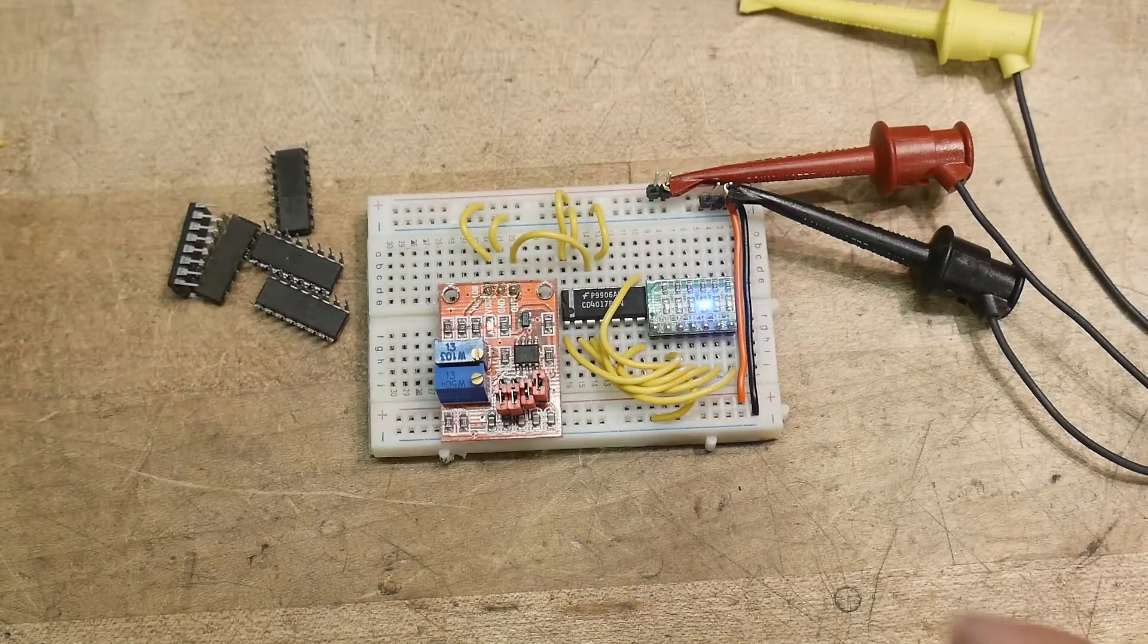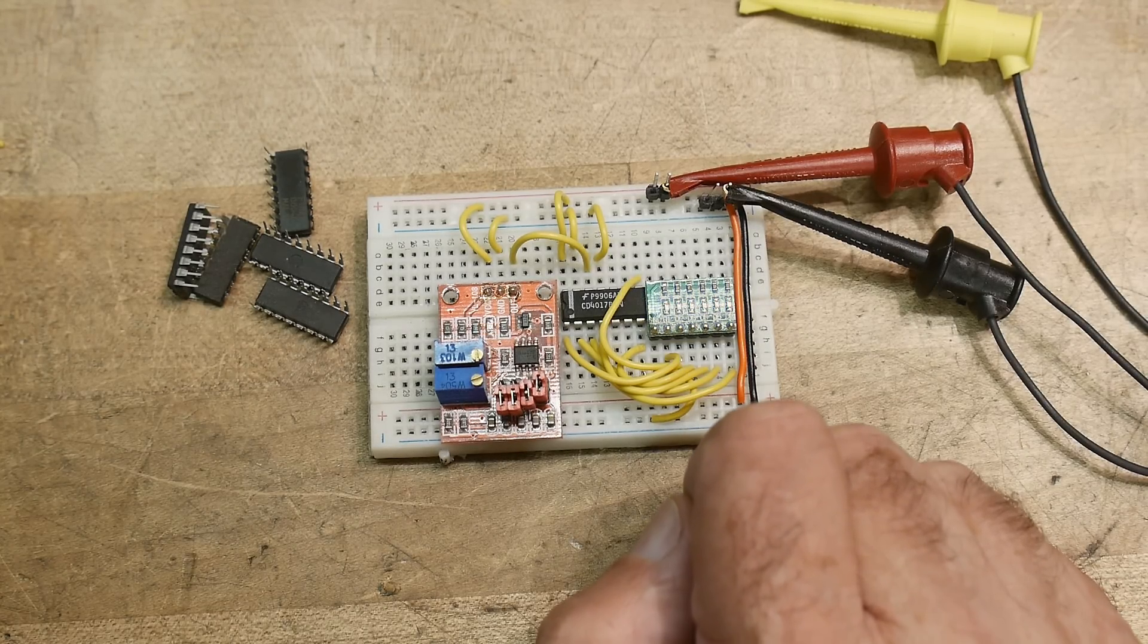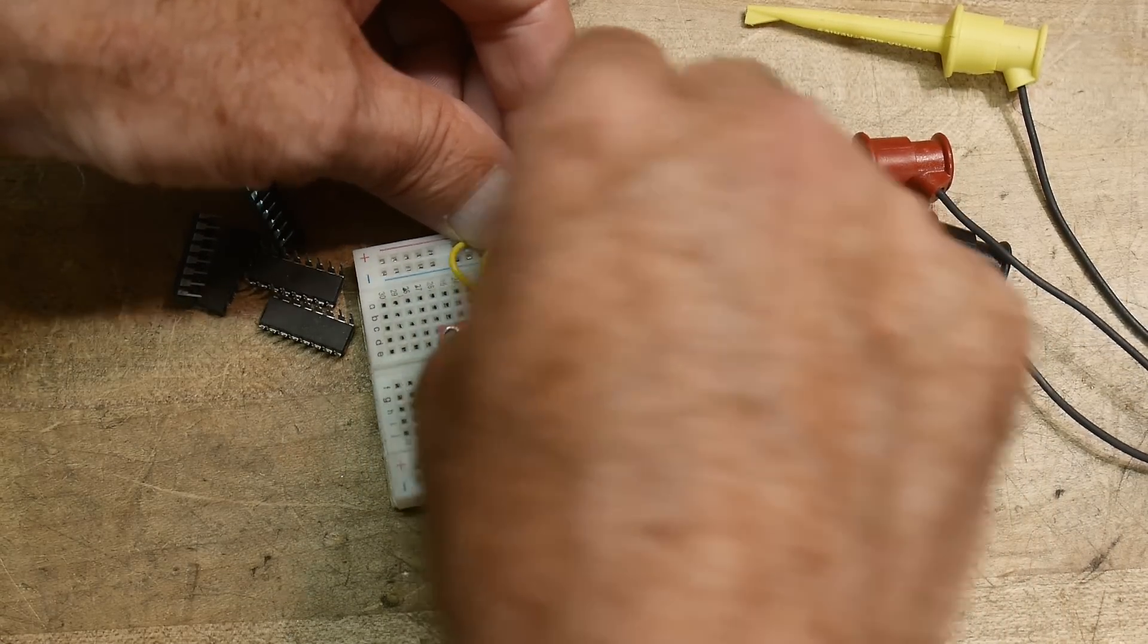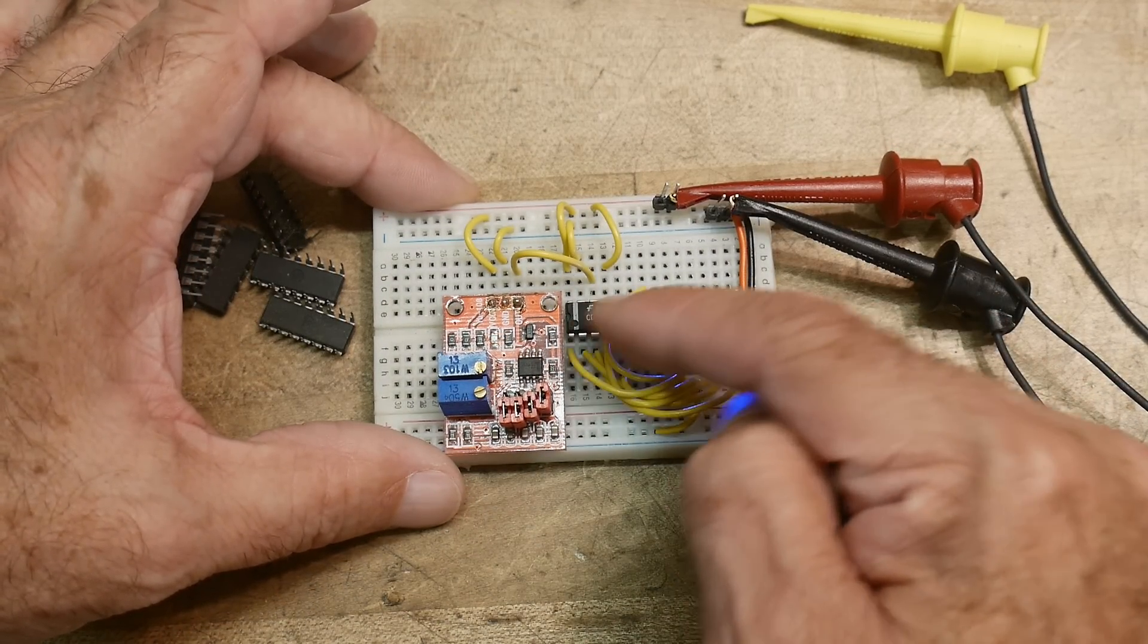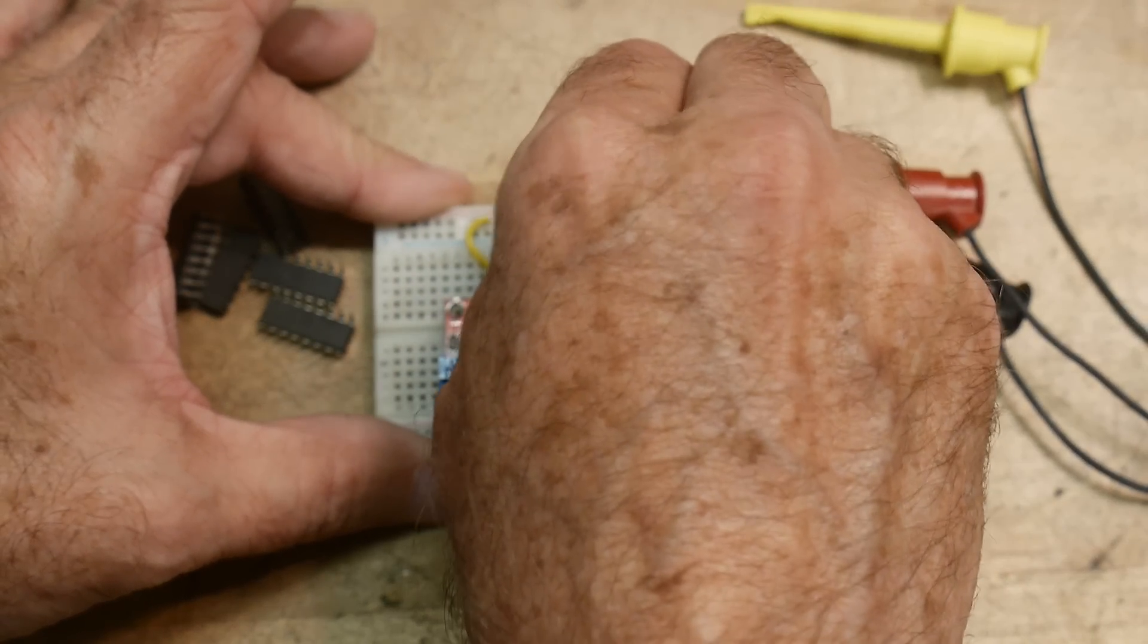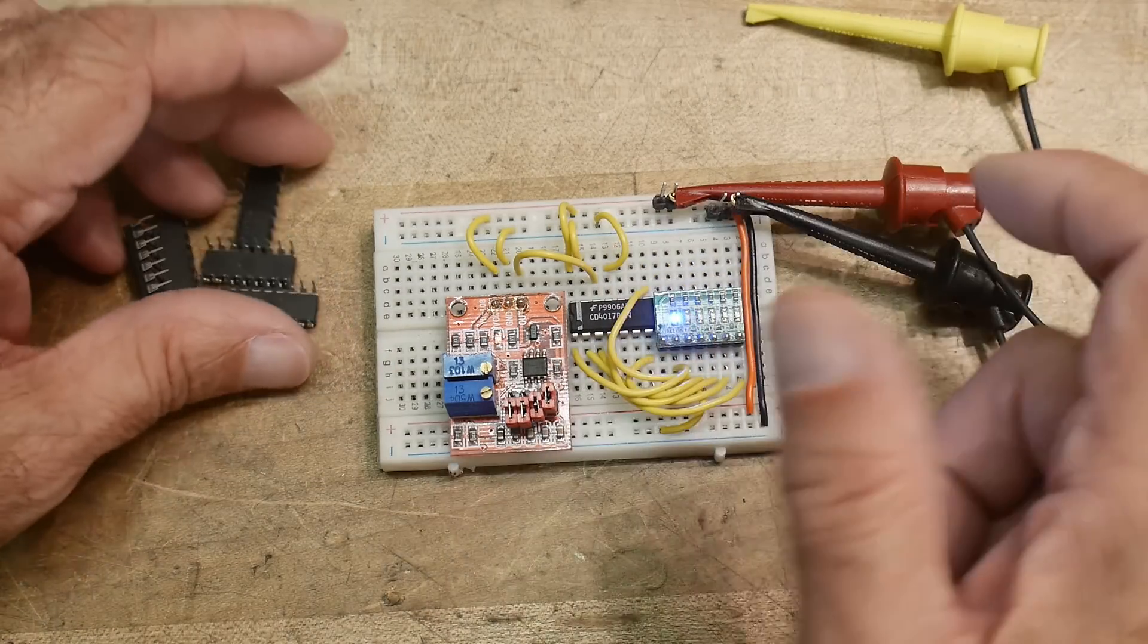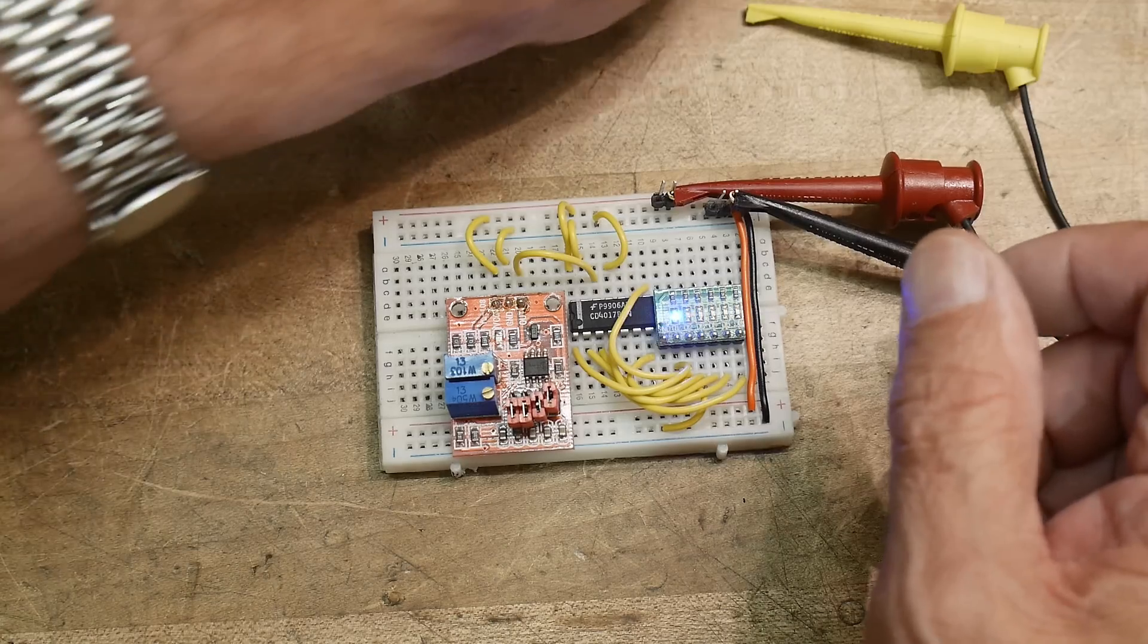There's a clock inhibit on pin 13. Right now it's grounded. Let me put it high. Now even though the 555 is toggling, the clock won't make it through the chip and it stays stationary. It's like a pause button. The other button is a reset. But I wanted to talk about the clock inhibit circuit to teach you something.